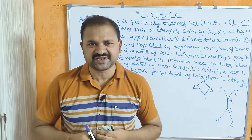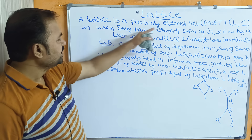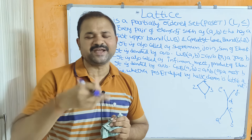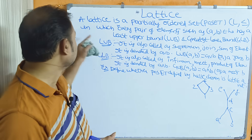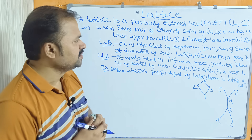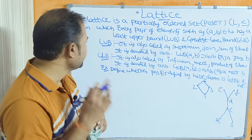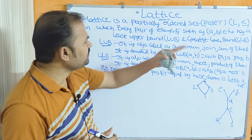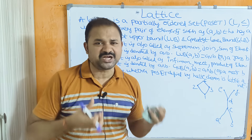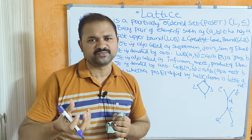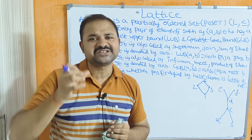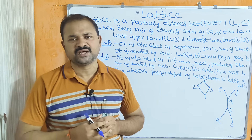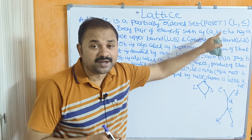First let's see the definition for a lattice. A lattice is a partially ordered set — that is, a poset denoted by (L, ≤) — in which every pair of elements A, B belonging to set L has a least upper bound (LUB) and a greatest lower bound (GLB). A partially ordered relation is one that is reflexive, antisymmetric, and transitive, and the corresponding set is called a partially ordered set or poset.